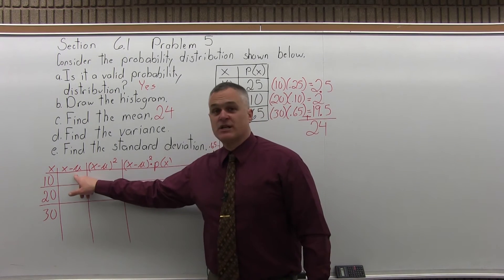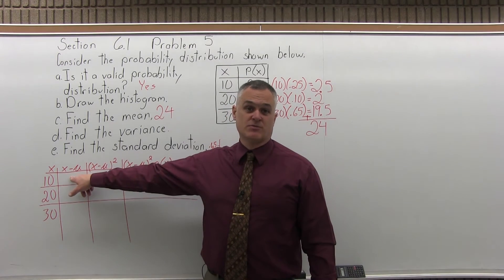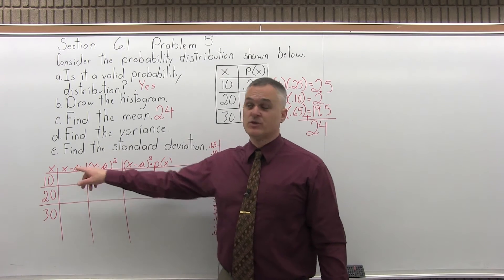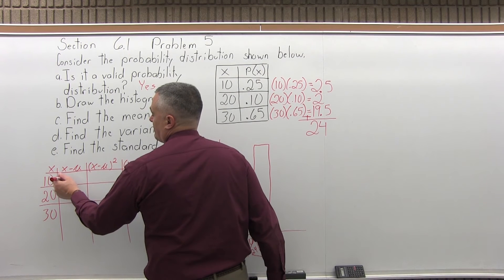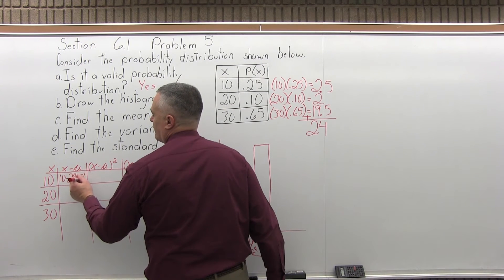Now the next column, x minus mu. So from every value of x, you'll subtract off the value of mu, the mean, which was 24. So in the top row, x minus mu is 10 minus 24, which is negative 14.